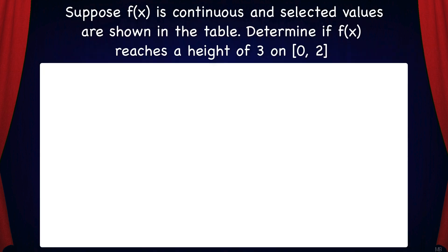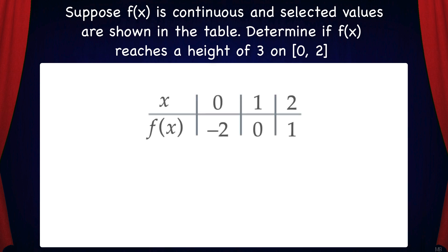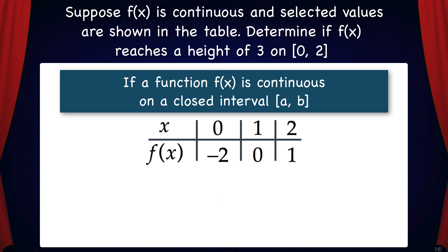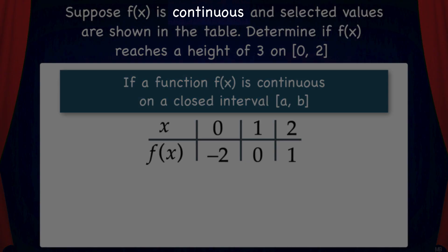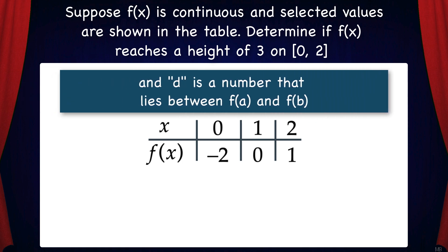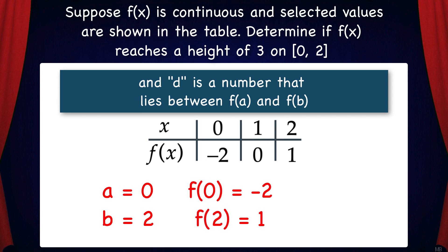Let's look at another example. Suppose f is continuous and selected values are shown in the table. Determine if f reaches a height of 3 on the interval 0 to 2. Let's trace through the sections of the Intermediate Value Theorem. The first part states: if a function f is continuous on the closed interval a to b. The problem states that f is continuous and we're given the closed interval 0 to 2. We know that a equals 0 and b equals 2, f(0) equals negative 2, and f(2) equals 1. We're looking to see if the function reaches a height of 3, so d equals 3.